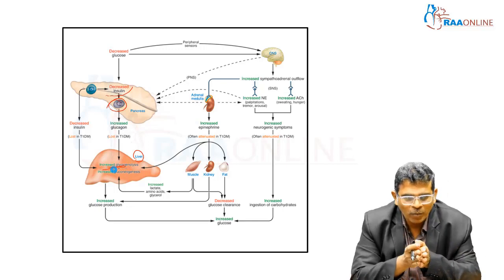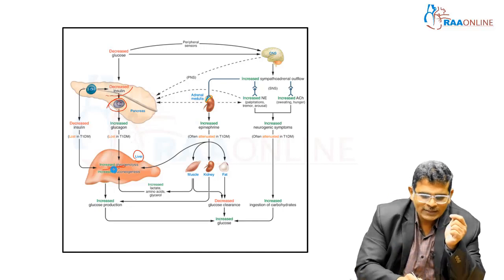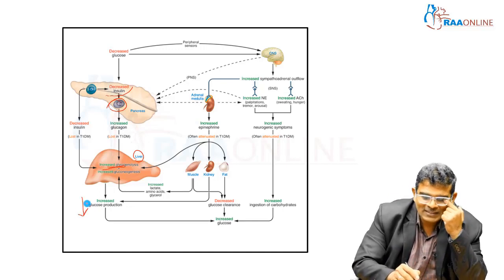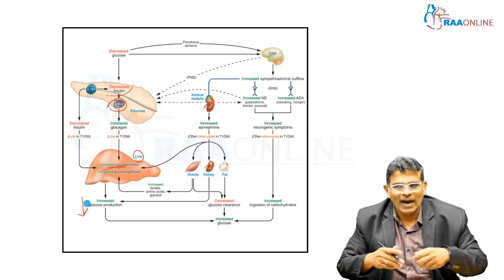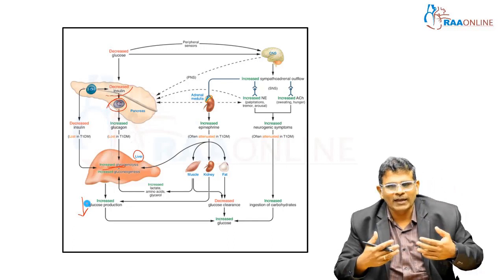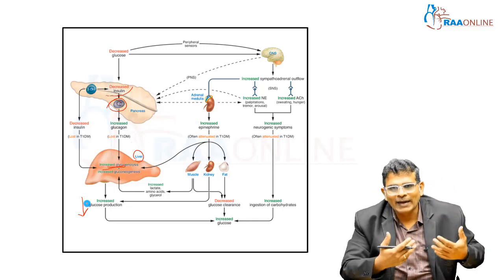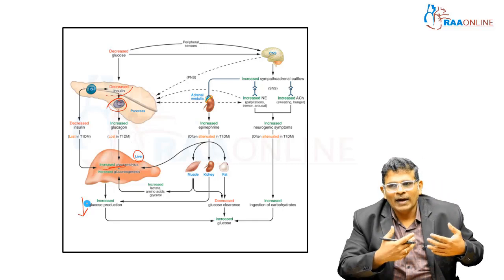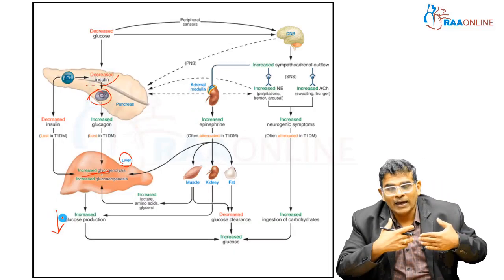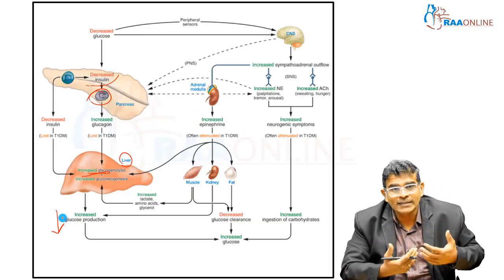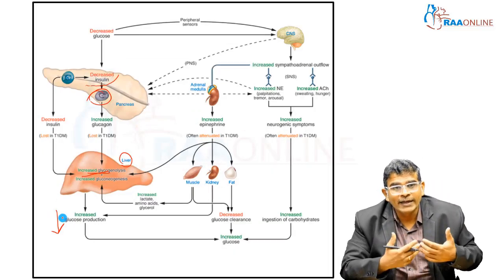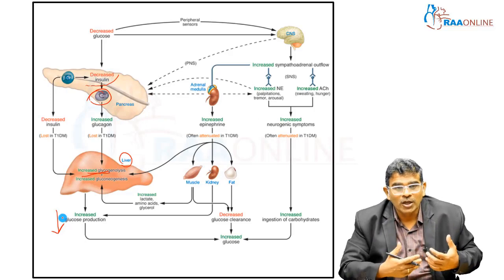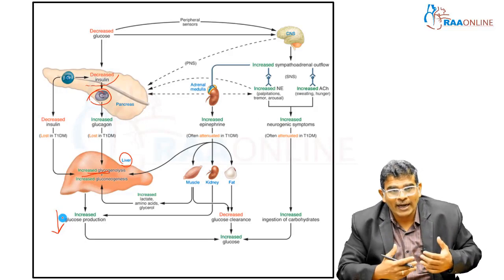The glycogen is broken down to produce more glucose, resulting in increased glucose production. This happens at the level of the liver. Other receptors — such as the carotid body, the gut, and the hepatic vein — can also sense the decrease in blood sugar.